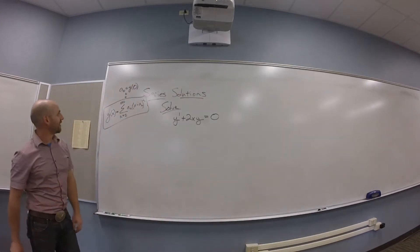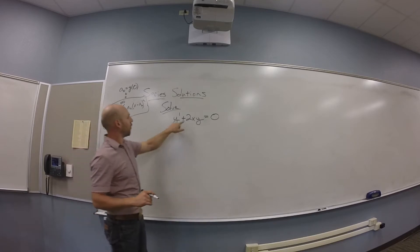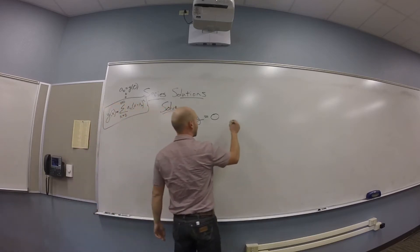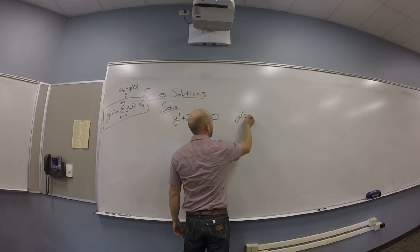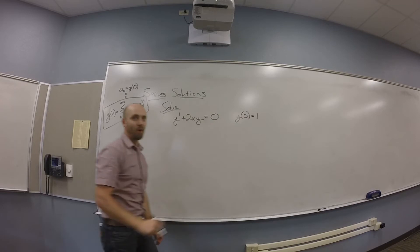All right, so let's try a series solution approach to solving Y prime plus 2XY equals 0. And what the heck, let's give an initial condition to make our lives easier. Say Y of 0 is 1.